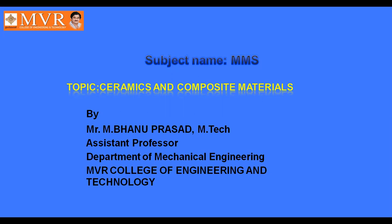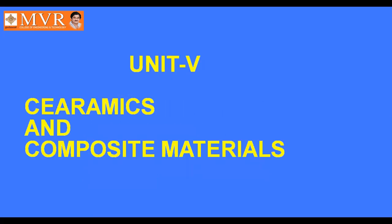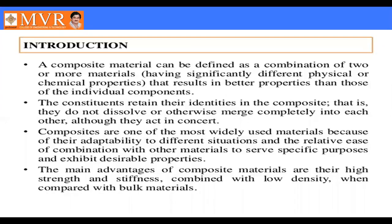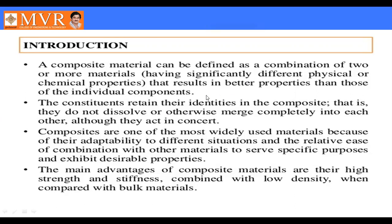Today we will discuss composite materials. A composite material can be defined as a combination of two or more materials. These materials have significantly different physical or chemical properties, and when combined they result in better properties than those of the individual components.